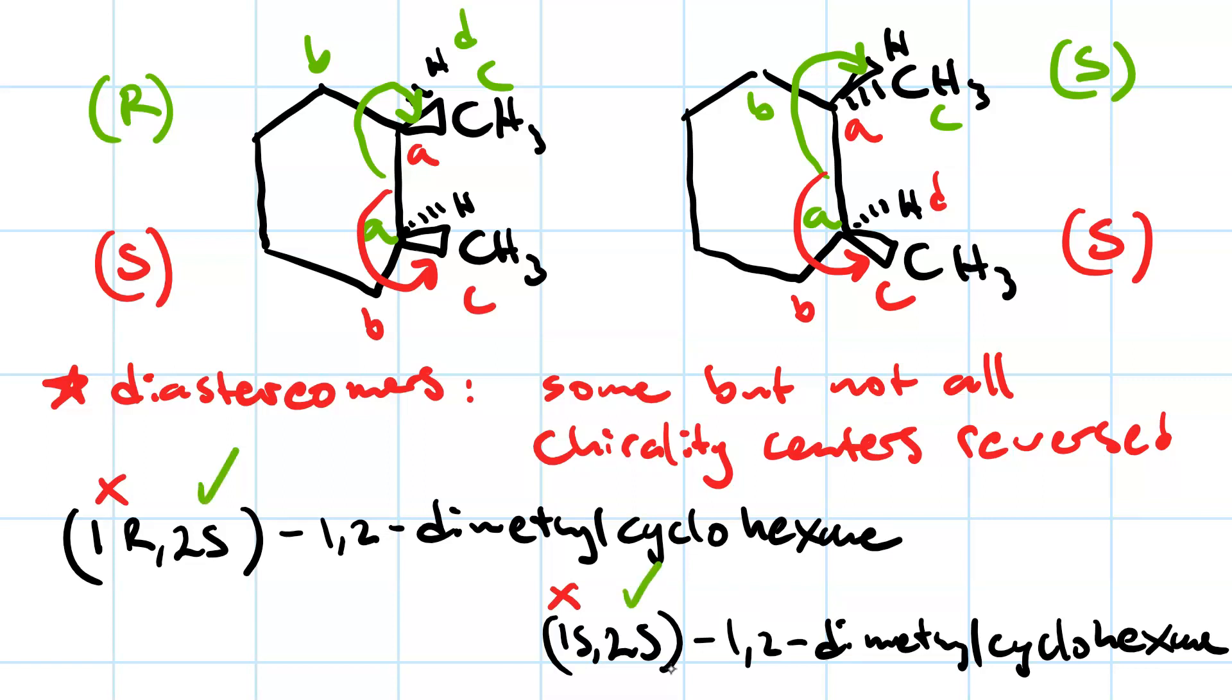And this also means that there is another diastereomer of this molecule. What if we kept the second chirality center, or rather, what if we kept the first chirality center the same but switched the second chirality center?